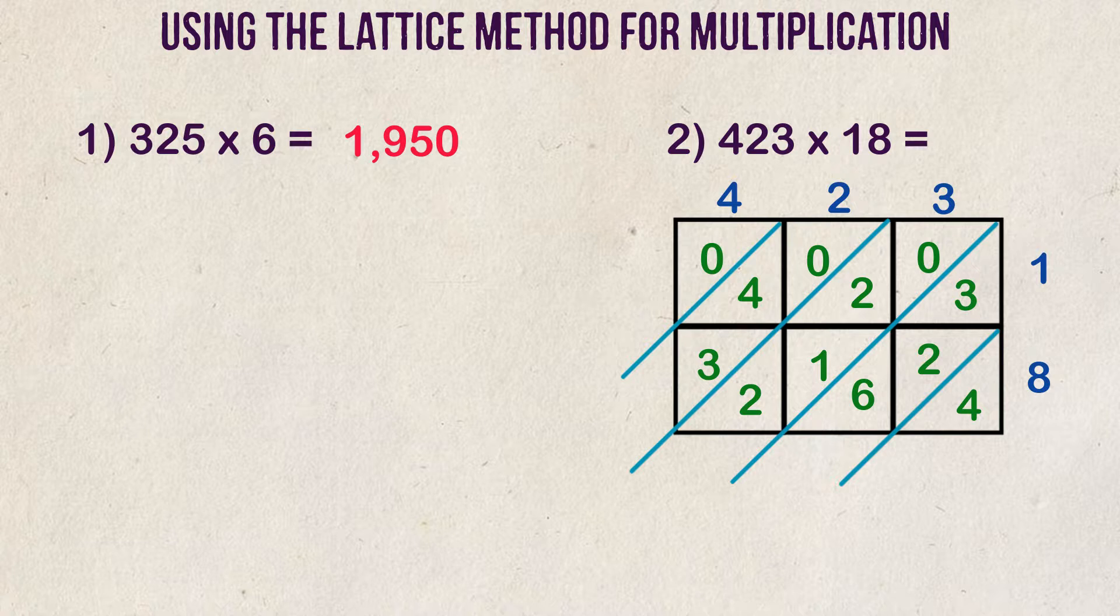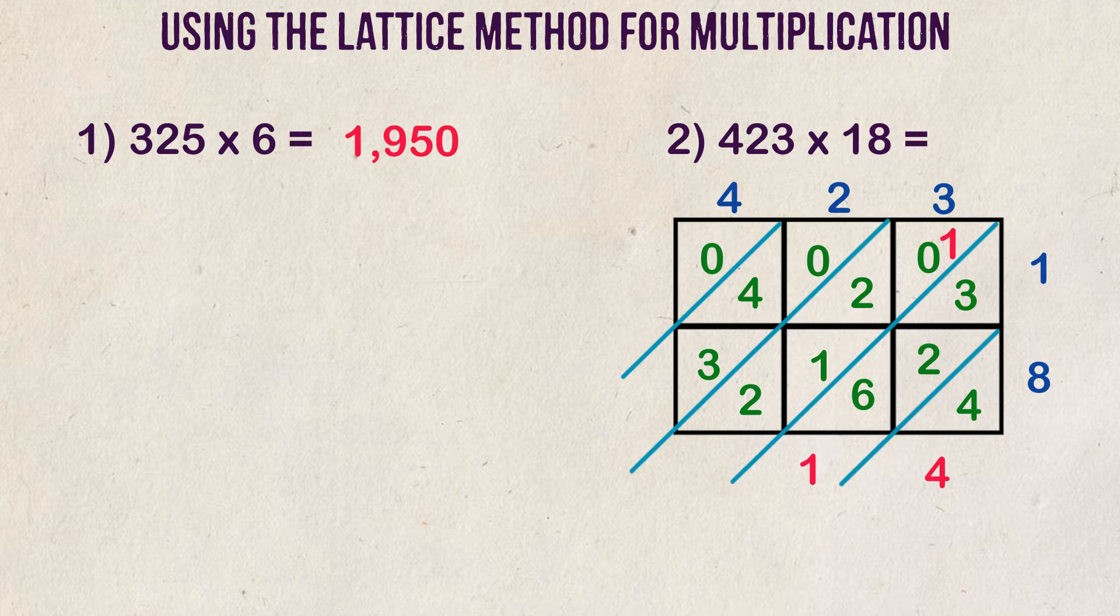Now, let's add them all up. We have 4 first. Next is 3 plus 2 plus 6, which equals 11. We put a 1 down here and carry the other one over to the next column. The next column is going to be 0 plus 2 plus 1 plus 1 plus 2, which is 6.